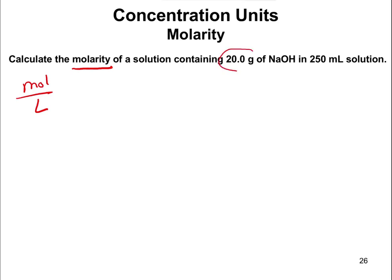We have 20 grams of NaOH — not moles — but we know we can go from grams to moles using the formula weight. We go to the periodic table to figure out the formula weight of NaOH. Sodium is 22.99, oxygen is 16, hydrogen is 1.01, which adds up to 40.0 grams per mole. Because we know the formula weight, anytime we know grams, we can figure out moles.